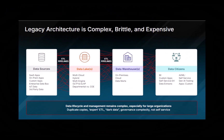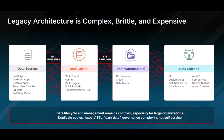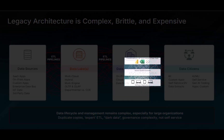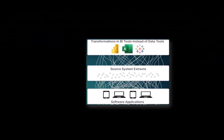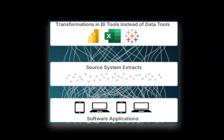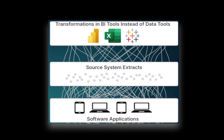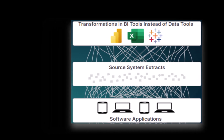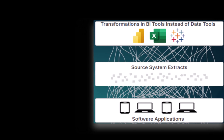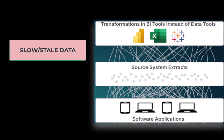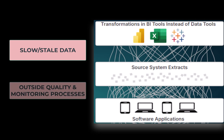ETL pipelines can also be brittle and require ongoing maintenance. If a data engineering team isn't available, an analyst may even resort to shadow ETL processes, like exporting the data and combining them later in a downstream BI tool, which aren't made for large-scale ongoing transformations. Any calculations and aggregations on top of that data will be slow, and the shadow ETL will not receive the same quality and monitoring standards of an official pipeline.